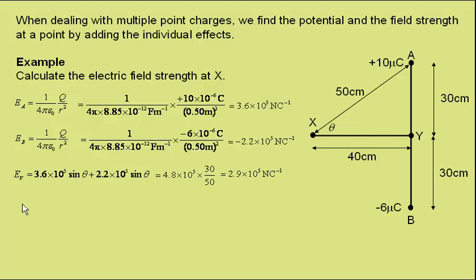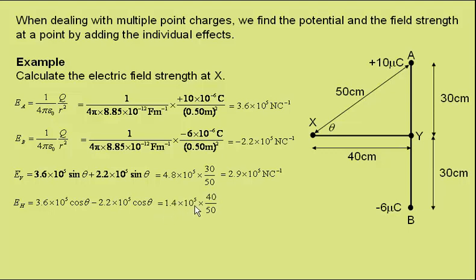Now we find the horizontal component of the electric field at X. The field from A will be towards the left, as that is a positive charge. The field from B will be towards the right, as it has a negative charge. We use the cosine of angle theta, and we subtract the component from charge B from that of charge A. This gives a horizontal component of 1.4 times 10 to the 5 — that is 3.6 minus 2.2 — times the cosine of theta, which is adjacent 40 over hypotenuse 50, giving a horizontal component of 1.1 times 10 to the 5 newtons per coulomb.